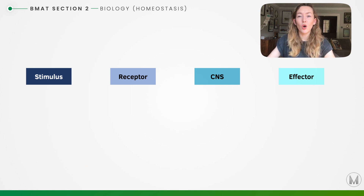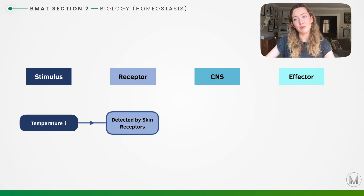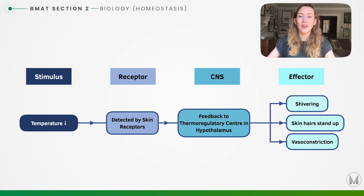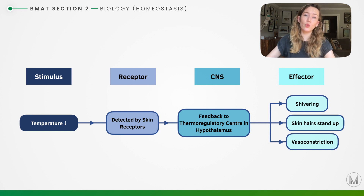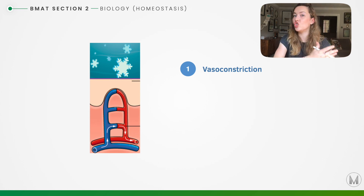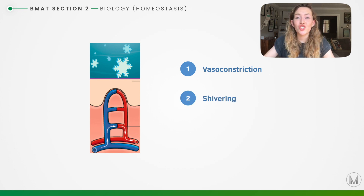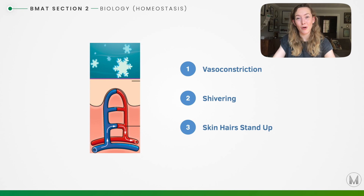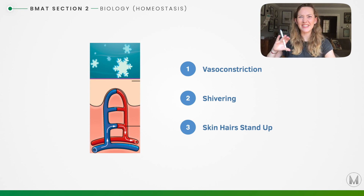If our body temperature falls, that stimulus is detected by receptors on our skin, sending a signal to the thermoregulatory centre in the hypothalamus. The effects include shivering — rhythmic contraction of muscles — skin hair standing on end to trap a layer of insulating air, and vasoconstriction. In vasoconstriction, nerve impulses tell the arterioles to constrict, reducing blood flow to the skin surface and reducing heat lost to surroundings. Shivering generates heat energy to warm the body, and erector pili muscles pull hairs on end to trap an insulating layer of air.